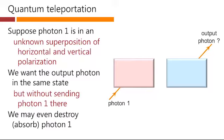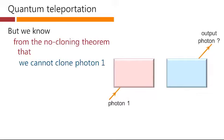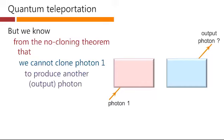We might even actually destroy photon one, possibly absorbing it. But we know from the no-cloning theorem that we cannot clone photon 1 to produce another output photon in the same arbitrary superposition as photon one.